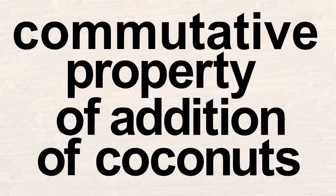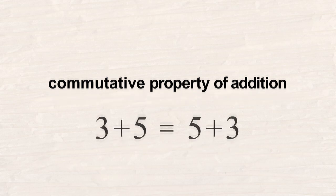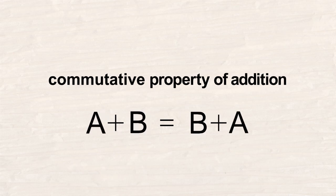Apparently, this property applies to adding anything. So we will just call it the commutative property of addition. So addition is a commutative operation. Instead of talking about specific numbers like three and five, if we call these two quantities A and B, then we can write this property in a more general way.